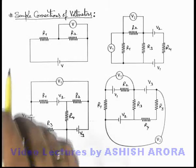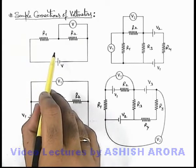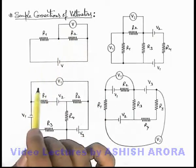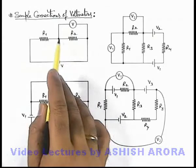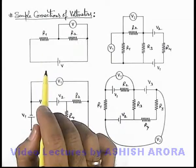In continuation, let's discuss the simple connection of voltmeters in various circuits. Here in the first figure we can see a voltmeter is connected in parallel across the resistance R2. So due to this battery, a current flows through the circuit, and a potential difference across R2 can be measured using this voltmeter.